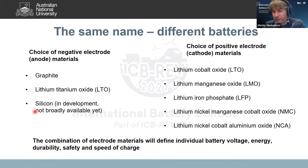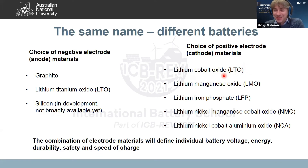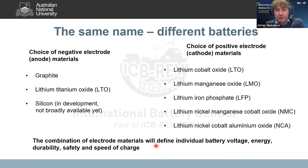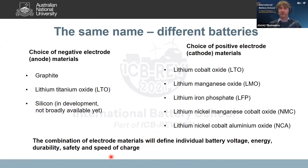On the positive side, you have choices including LCO (lithium cobalt oxide), LMO (lithium manganese oxide), LFP (lithium iron phosphate), NMC, and NCA. Using simple math, you can calculate up to 15 different battery combinations using these materials. Importantly, depending on which pair you pick, you will end up with a different voltage, different energy, and different reliability, safety, and speed of charge — some systems will be fast to charge, some will not, some will have more energy, some less.